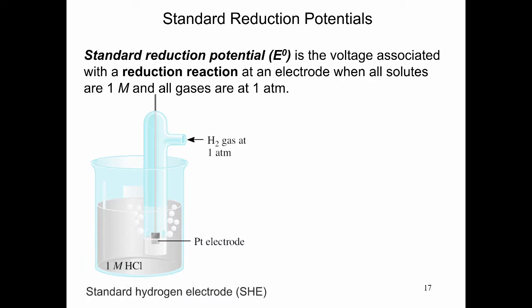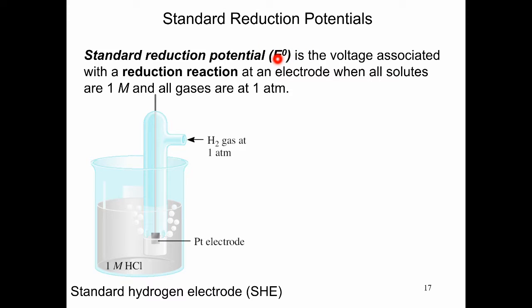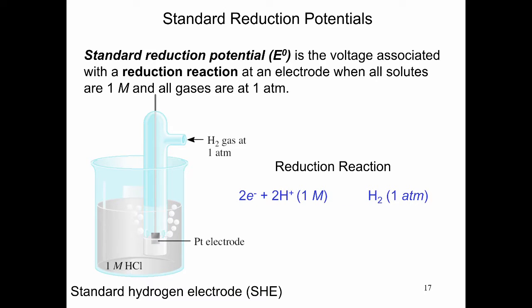The standard reduction potential is usually called E° — E raised to zero. Reduction potential is given as capital E, and if it's a standard reduction potential it has a superscript of zero, meaning it occurs at standard conditions. Standard conditions are 1 molar concentration and 1 atm pressure. The standard hydrogen electrode is used to actually measure the standard reduction potential, and that is a measured value. The standard reduction potential is a constant for the metal at standard conditions.